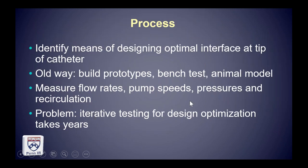In solving this problem, you identify the means of designing the optimal interface of the tip of the dialysis catheter. The conventional way was to build a bunch of prototypes, test them in a bench model of hemodialysis at flow rates of 400 milliliters per minute, iterate to the optimal model, test in an animal model, and then move on to a clinical catheter. You would measure flow rates, dialysis pump speeds, arterial and venous pressures within the dialysis circuit, and recirculation.